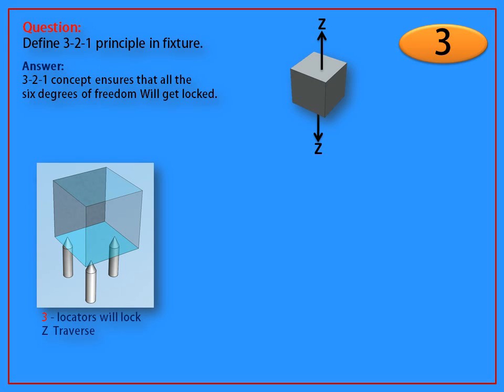First three locators will lock Z traverse, X rotational, and Y rotational.